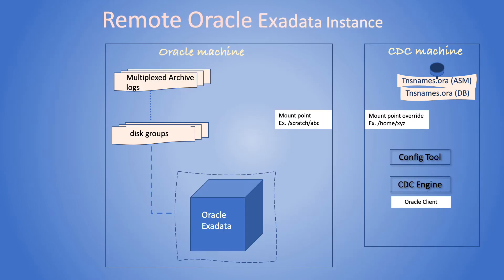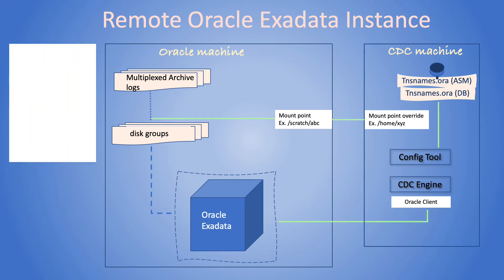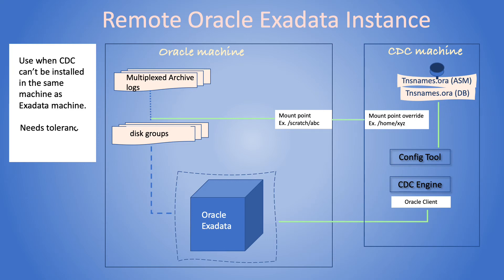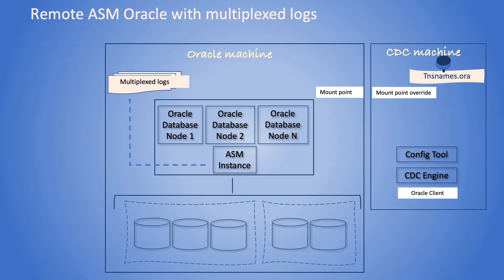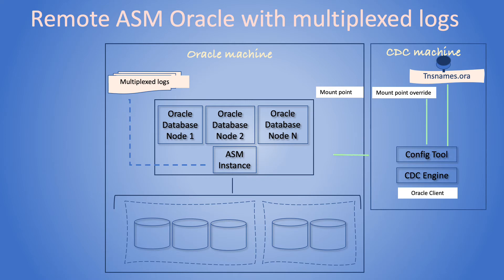Here is the description of how CDC engine works with a remote Oracle Exadata box — it is very similar to the ASM configuration we just discussed. One way to work with ASM is to get archive logs out of ASM disk using Oracle utilities.